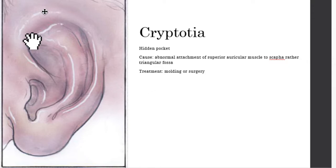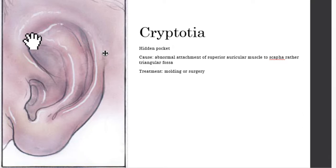Cryptotia is a hidden pocket of an ear. Some believe it's caused by an abnormal attachment of the superior auricular muscle to the scapha rather than to the triangular fossa, though this may not be a widely held belief — it's what Bailey's discusses. Treatment: ear molding in the first few weeks of life if caught early; otherwise, surgical repair with a skin graft in the back to lift the ear back up.